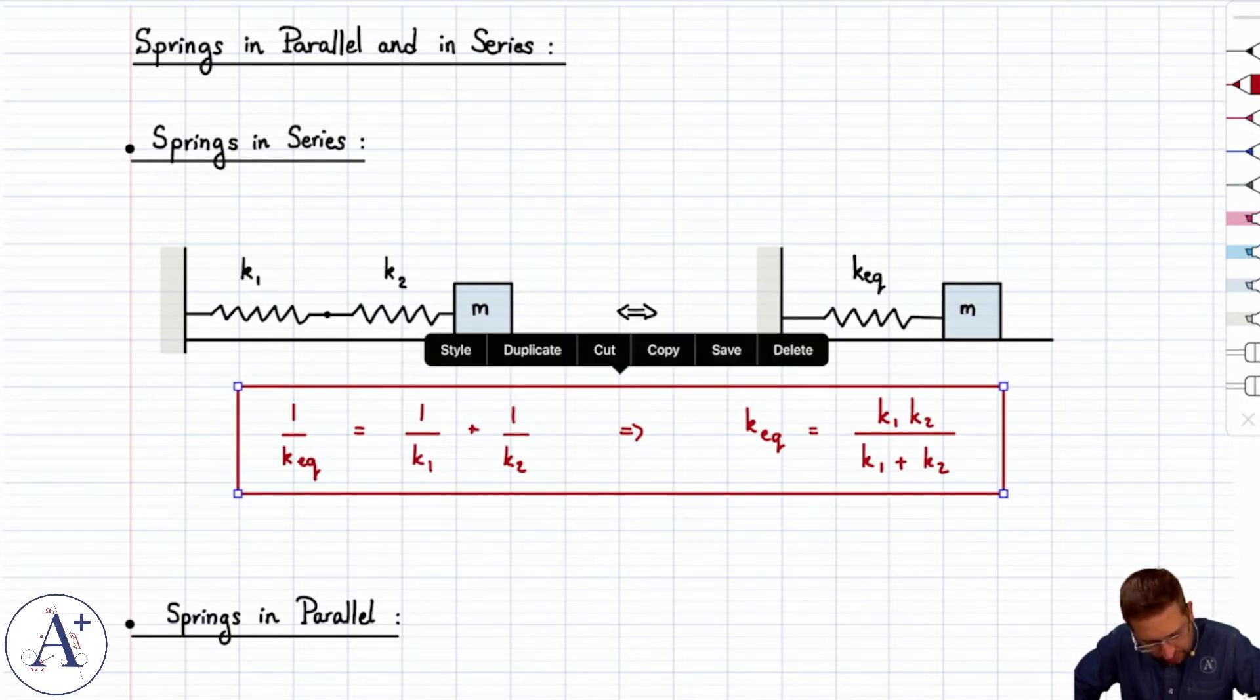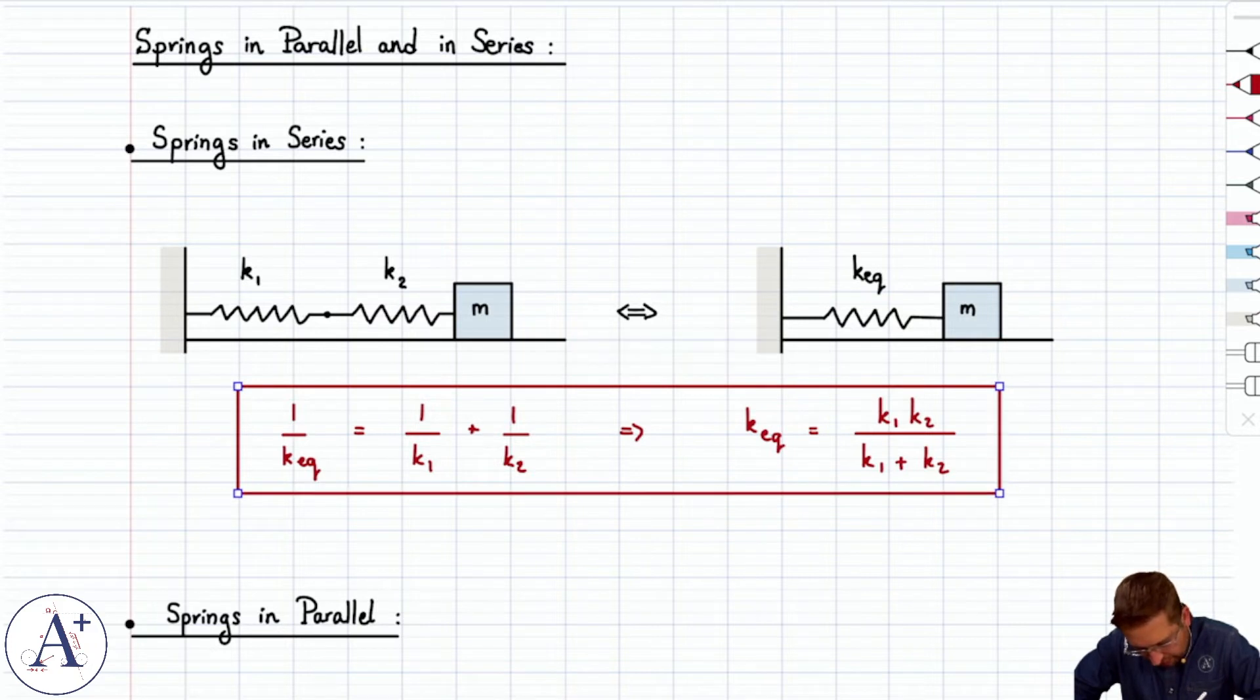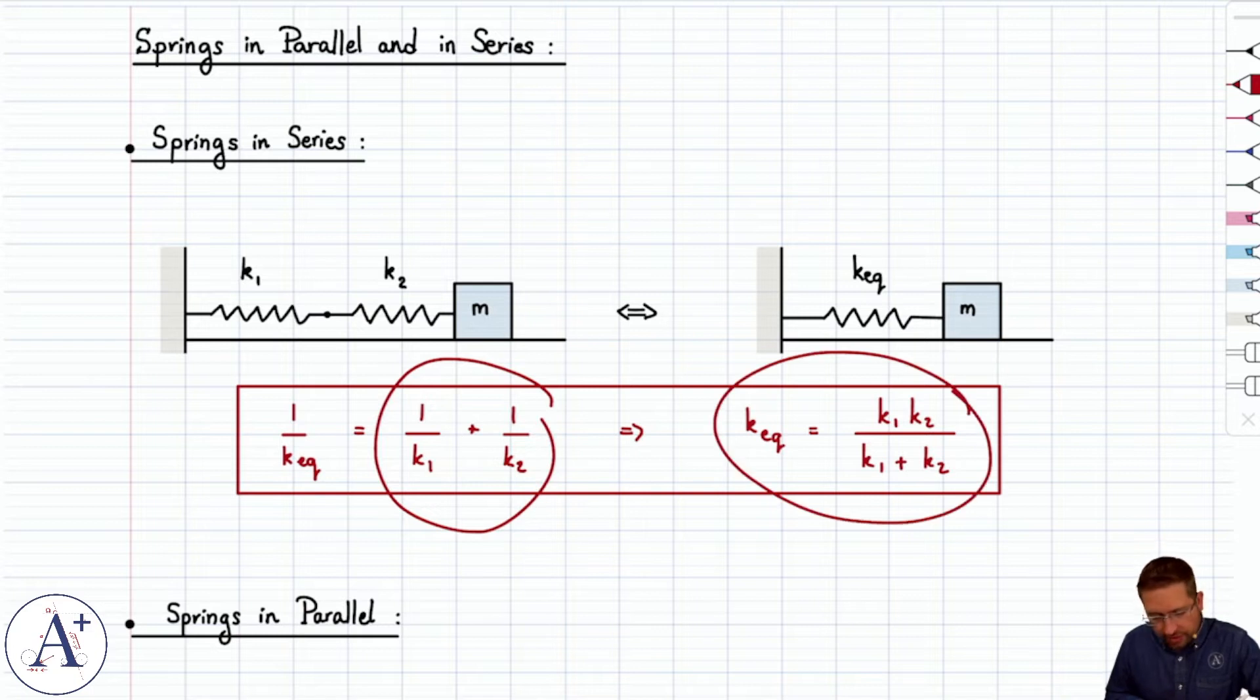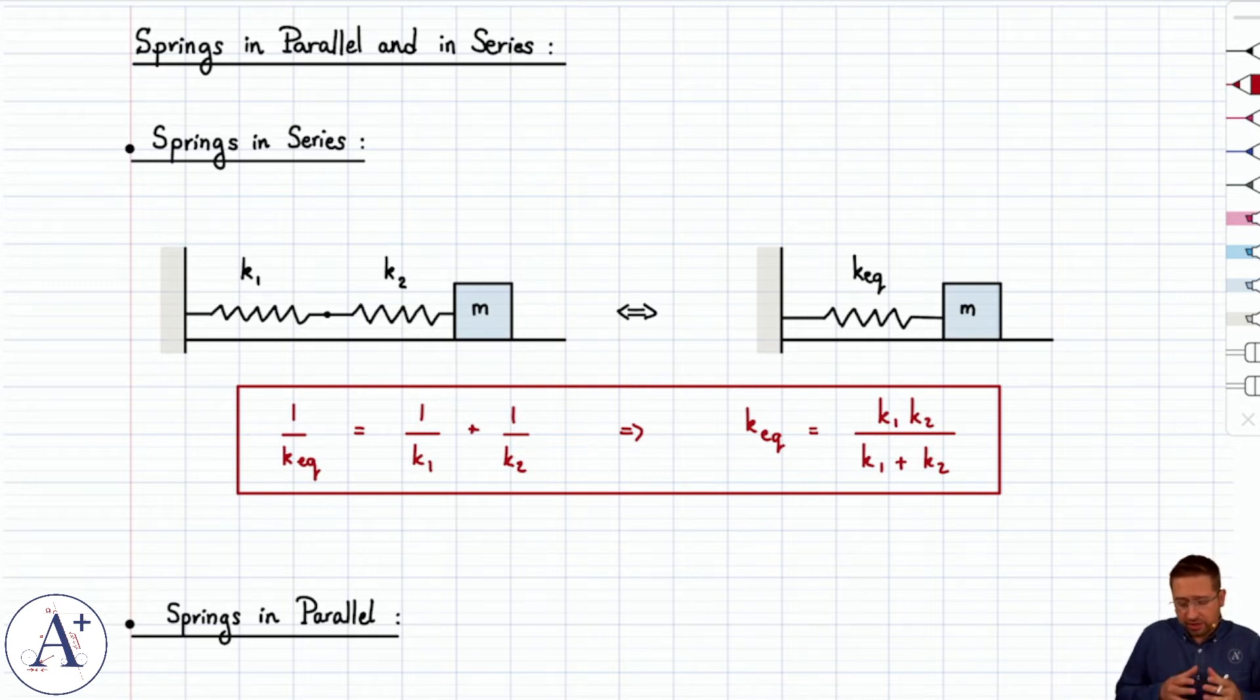So either form is fine. Of course, if you have three or four springs, you might as well just start with the left-hand side and combine all of those together before you find k-equivalent. But if you just have two springs, you can either use this form or directly the result. Just don't confuse the two. What that gives you is k-equivalent, which tells you what stiffness the spring has to have if you take only one spring with a constant k-equivalent, so that it has the same behavior as these two springs on the left.